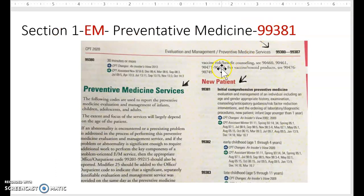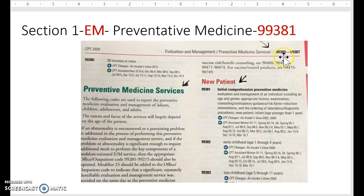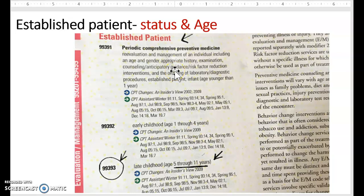Now we go from the index to our tabular section — the beginning of the book in our evaluation and management red pages — and we are looking for preventative medicine. The best way to find a code is to check the upper corners of the page for the code ranges. We are looking for 99381, which appears in the range 99380 to 99387. However, this page shows new patient codes, and our patient is an established patient, so we turn the page.